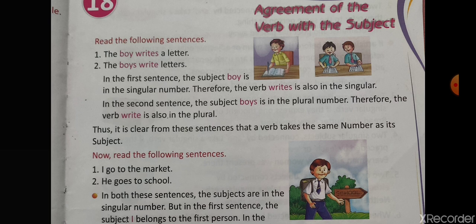With the subject 'boy', since there is only one boy we are talking about, we use 'writes', which is in singular form. And with the word 'boys', which is plural, we always use 'write', which is plural. Thus, it is clear from these sentences that a verb takes the same number as its subject.